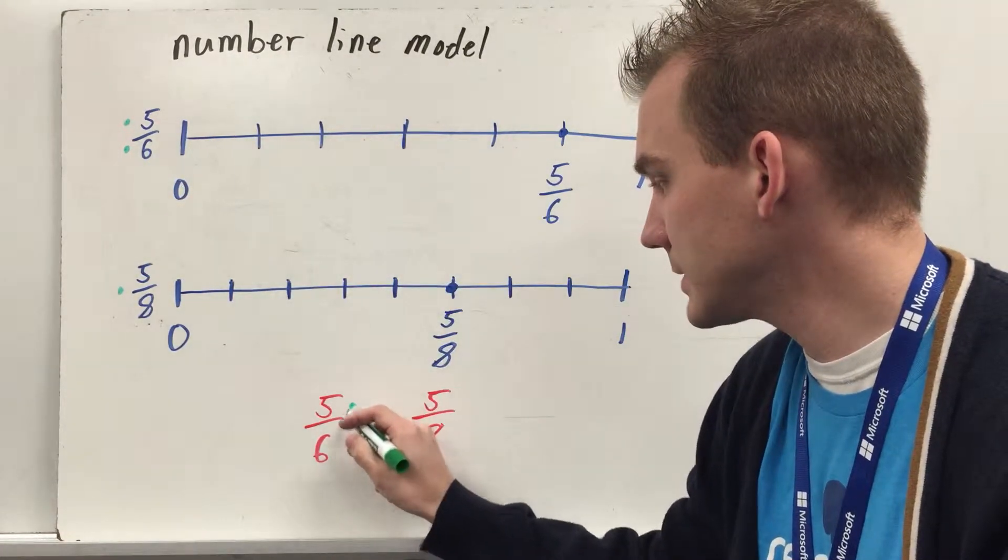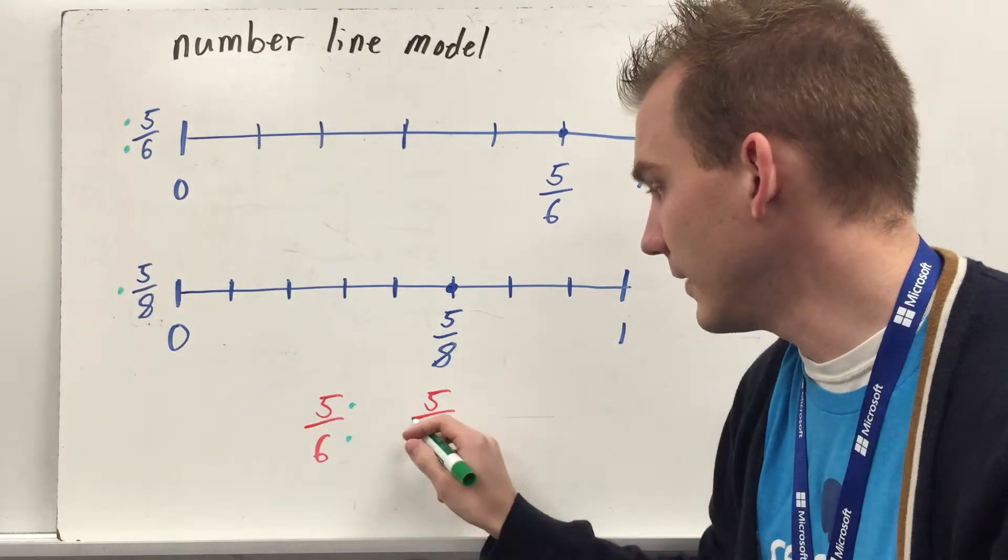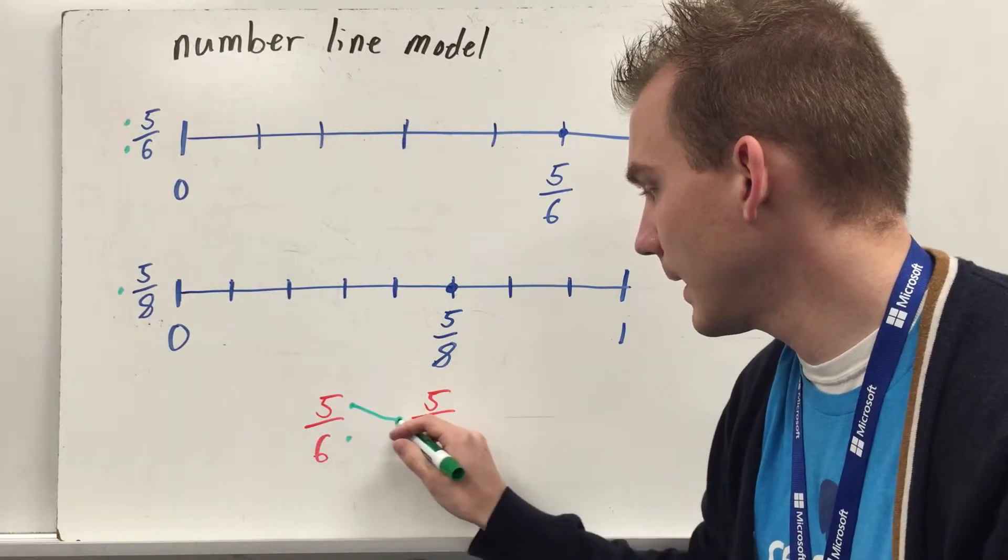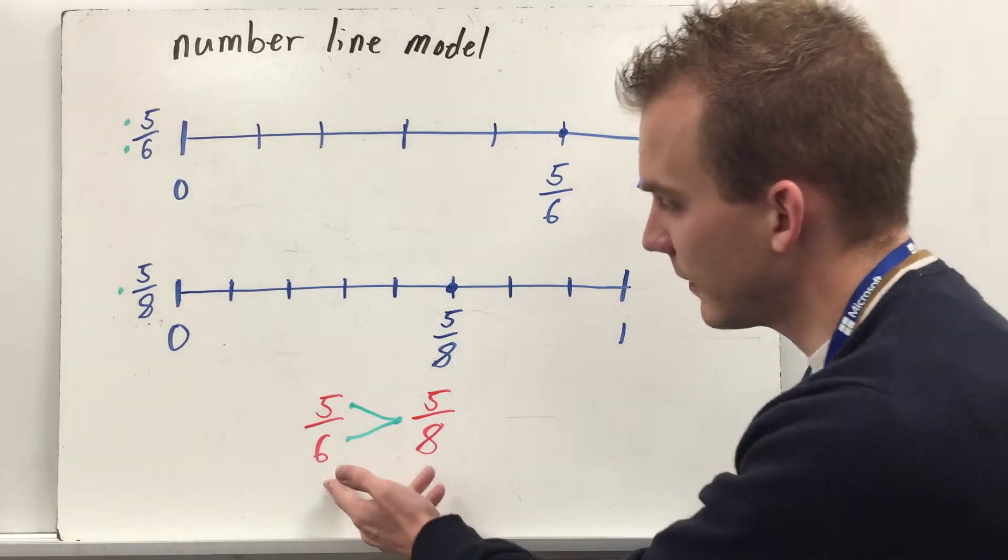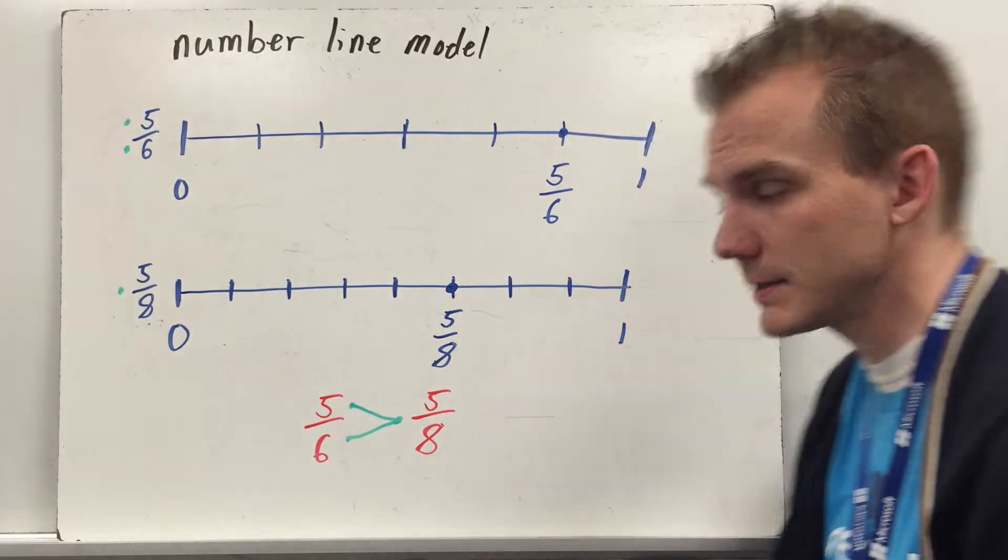Now I can come down here to my comparison, five-sixths gets two dots, and five-eighths gets one dot. I connect my dots, five-sixths is greater than five-eighths.